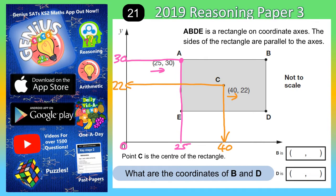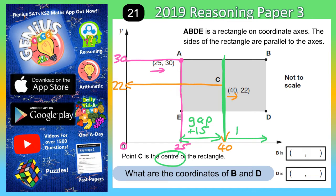Now you need to be a little bit smart, because it tells you that point C is the centre of the rectangle. If C is the centre, there's a line of symmetry. The gap from 25 to 40 horizontally is 15, because 25 plus 15 equals 40. So we add 15 onto 40, giving us 55. That means points B and D must both be level with x = 55.